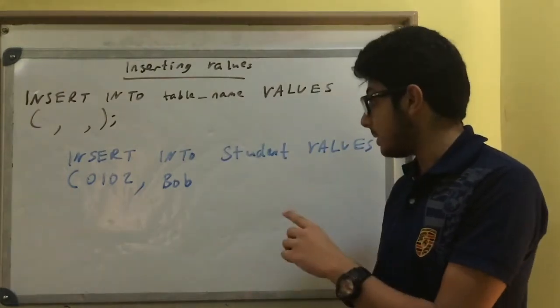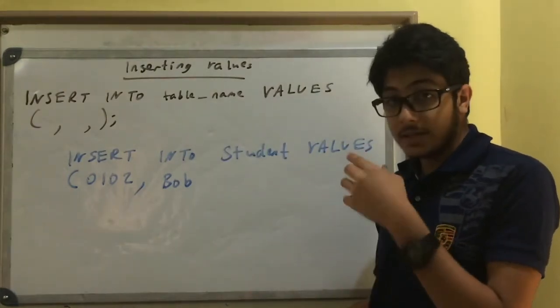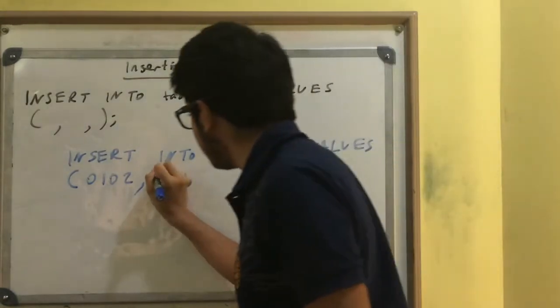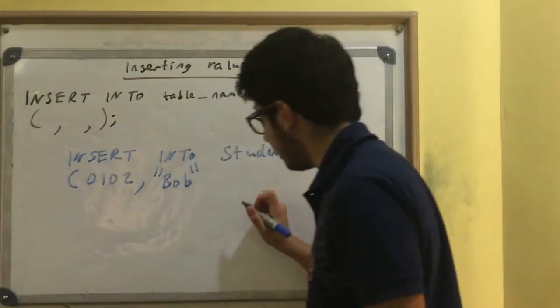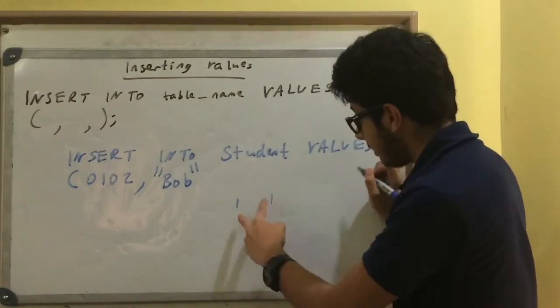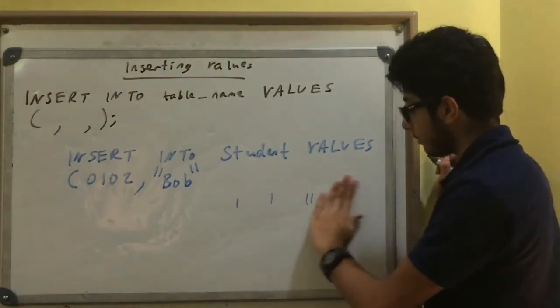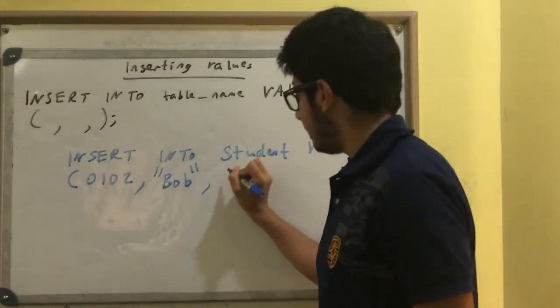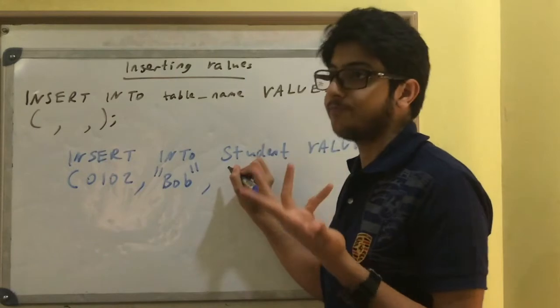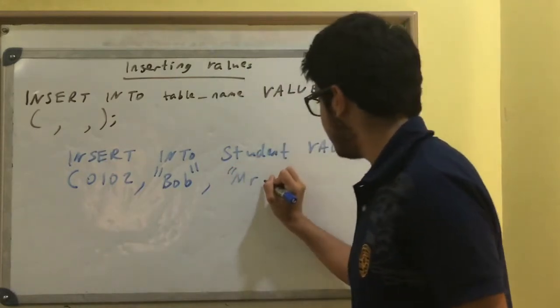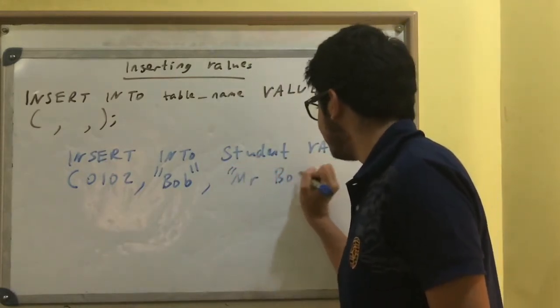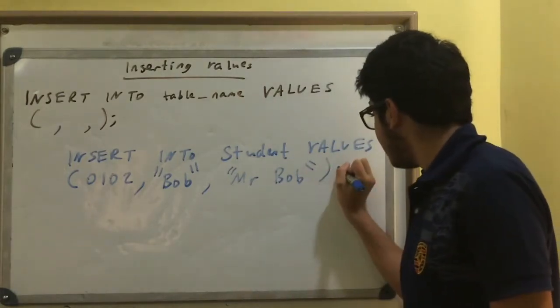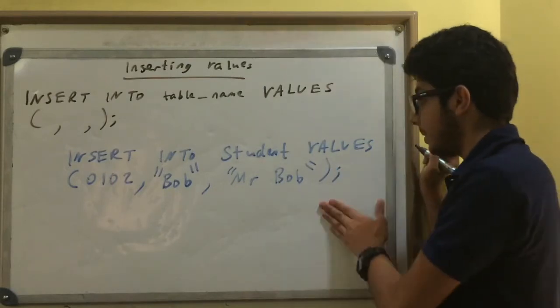But that's not right, that's a syntax error. Because if it is a text or a data type that is a word, a character, you need to put quotation marks, whether it's just one or two. And then the teacher name, let's say Mr. Bob. Obviously you would have more original teacher names. And then close bracket, semicolon.